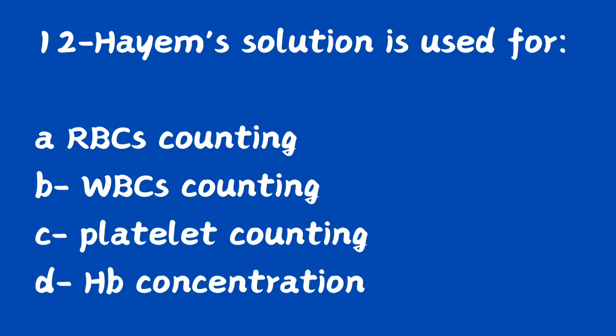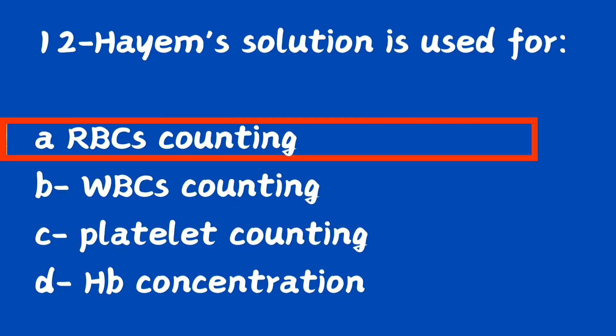Question number 12. Hayem solution is used for: option A, RBC counting; option B, WBC counting; option C, platelet counting; option D, hemoglobin concentration. The right answer is option A, RBC counting. Hayem's fluid is used for RBC counting.